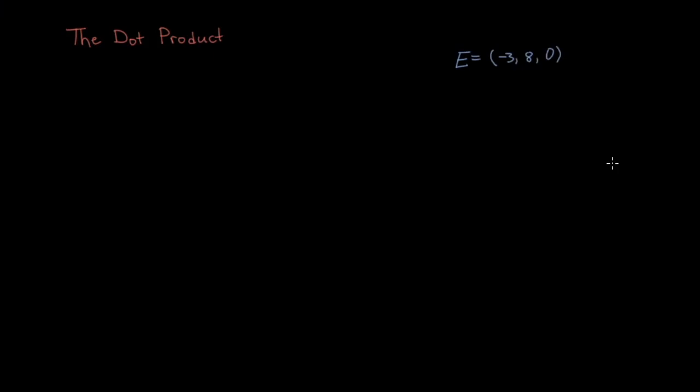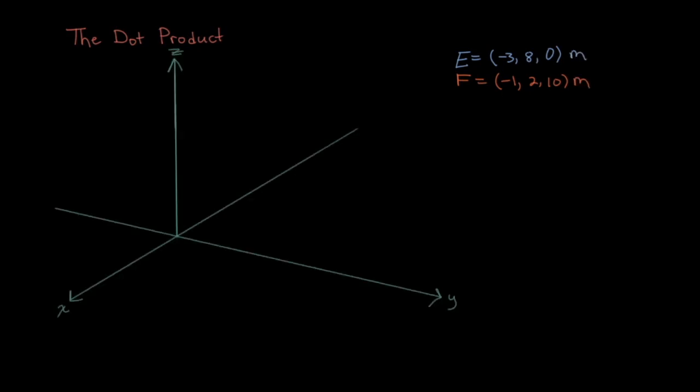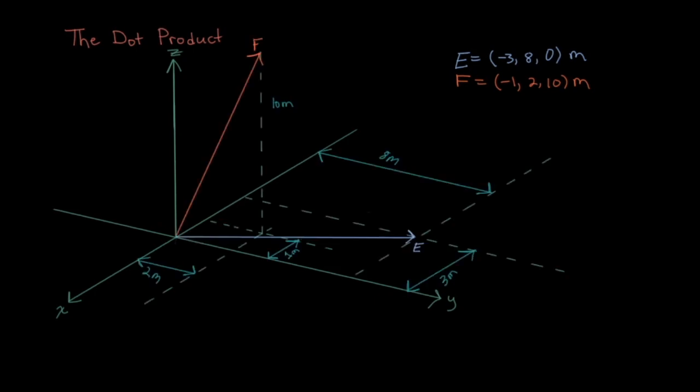And E is equal to (-3, 8, 0), and F is equal to (-1, 2, 10). And we'll say both these vectors are directions in meters. So let's see what both these vectors look like. Here they are, and we want to get the dot product of E and F.